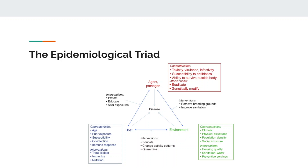The agent is probably the simplest to define — it's what's causing the disease. It can be the microorganism causing it, or it can be a toxin. The agent is also the easiest to identify interventions for, because you just target whatever is causing the disease.